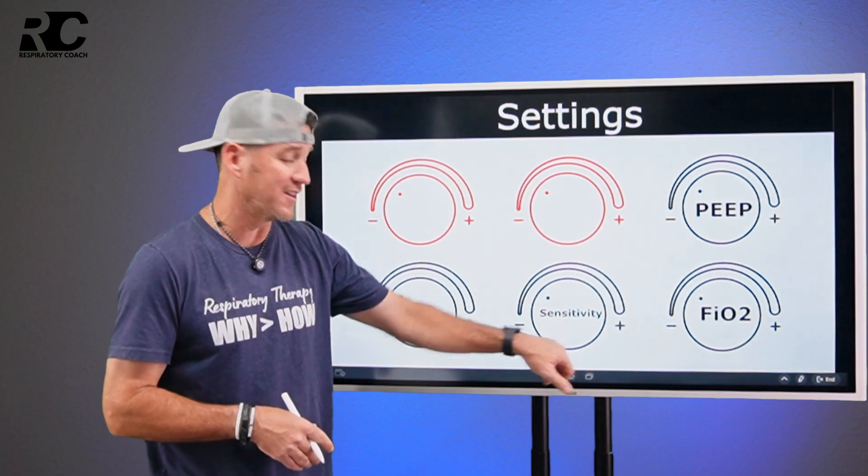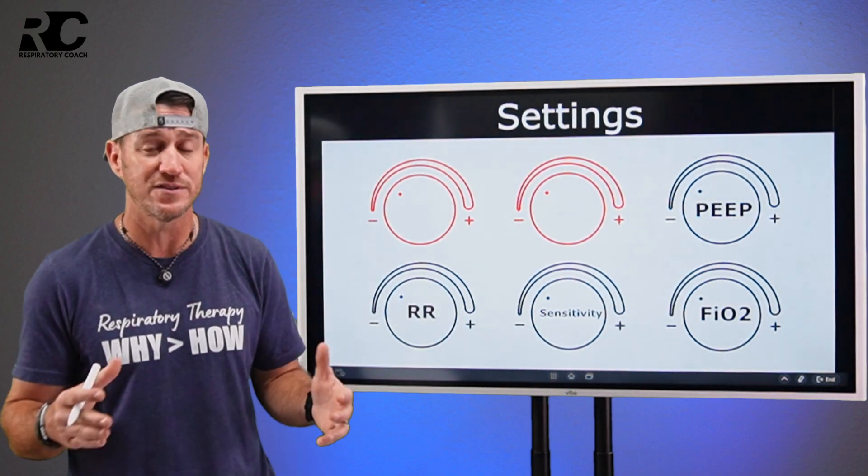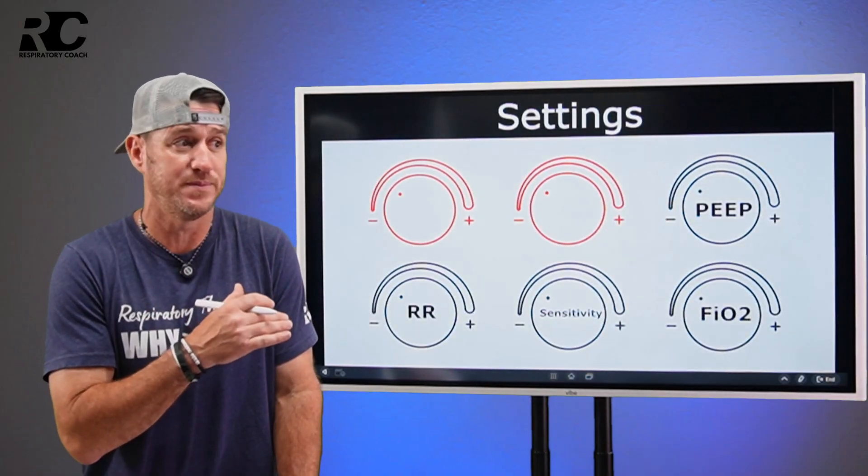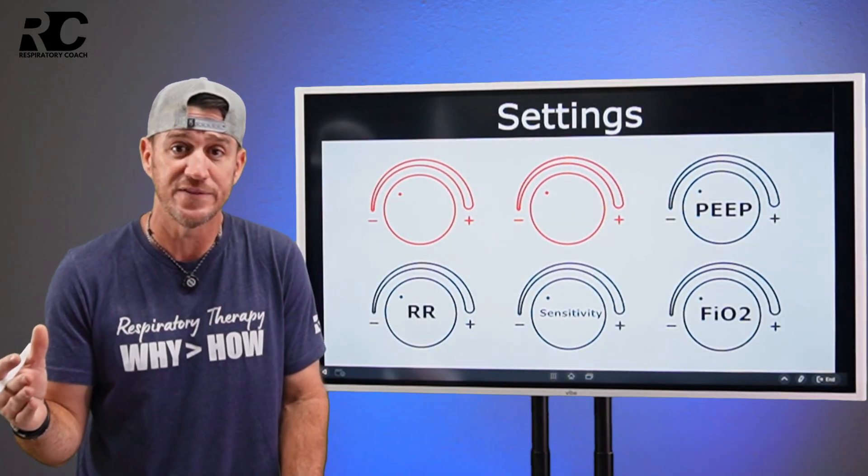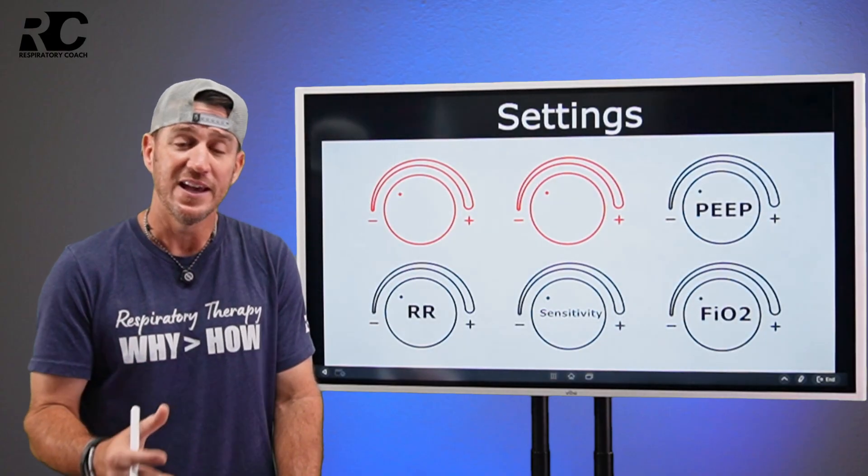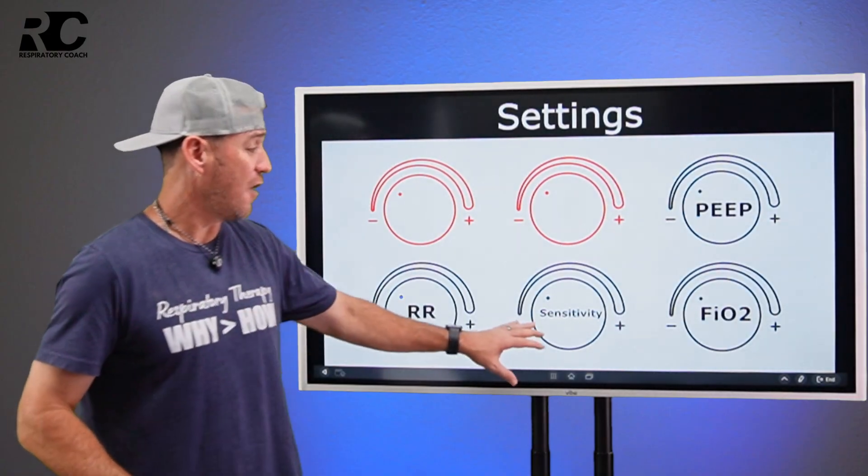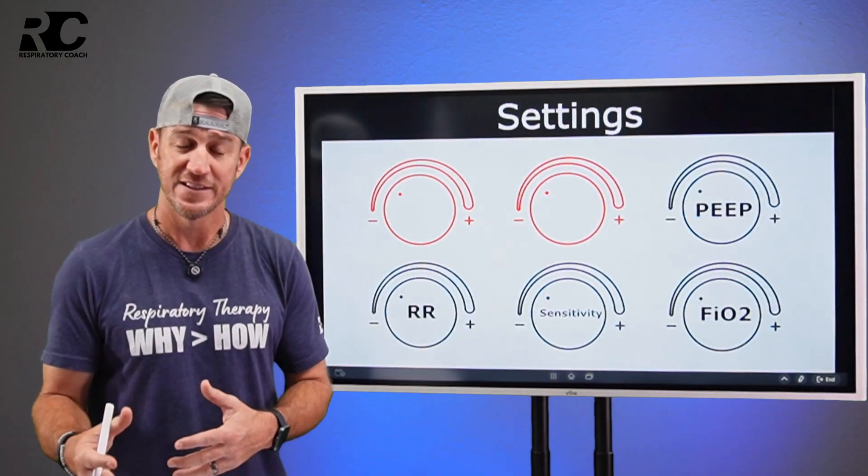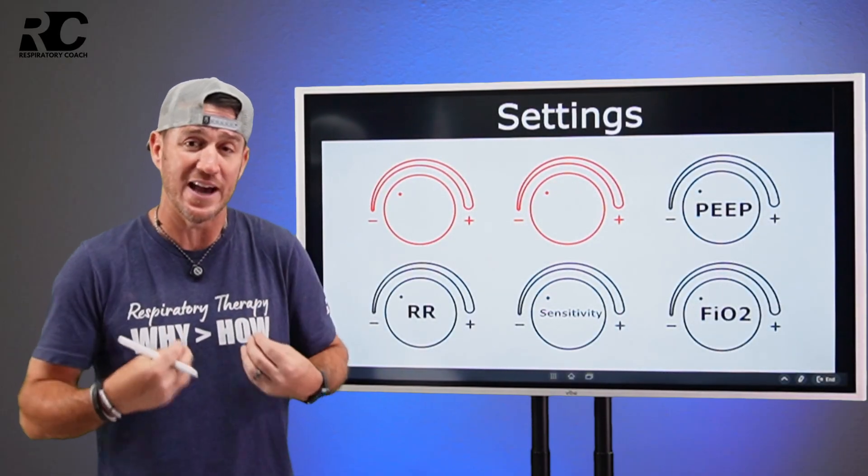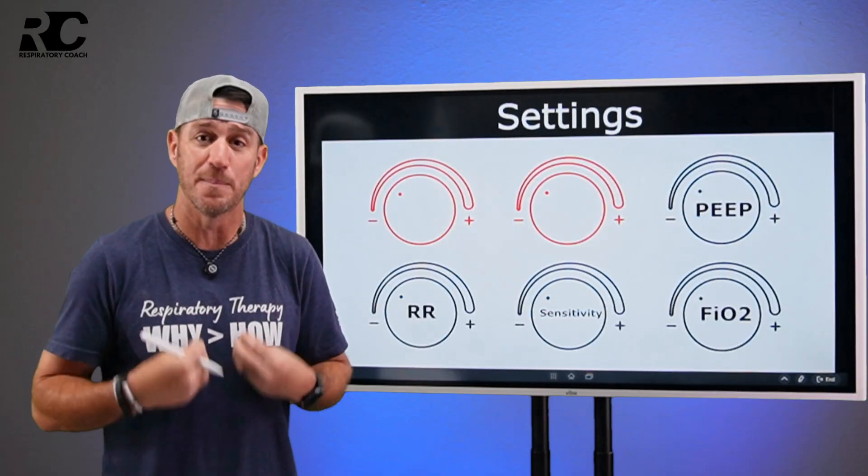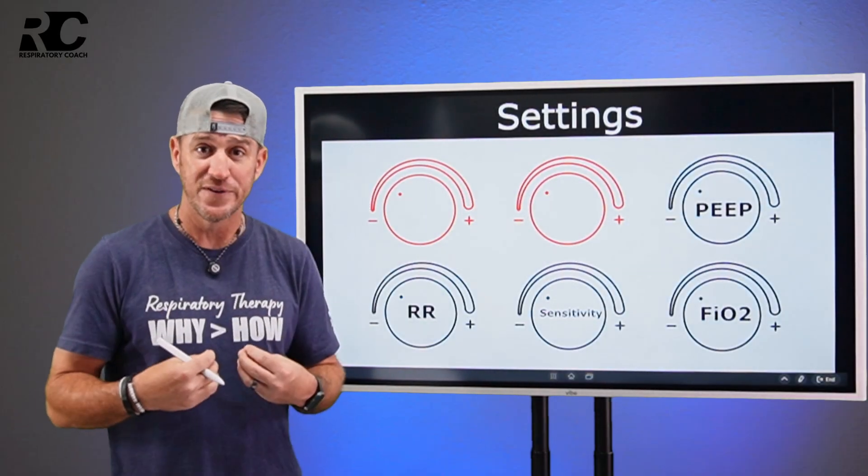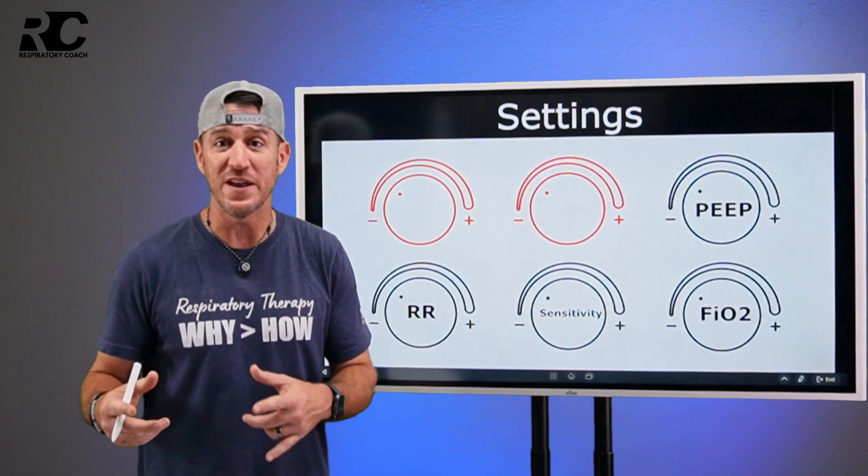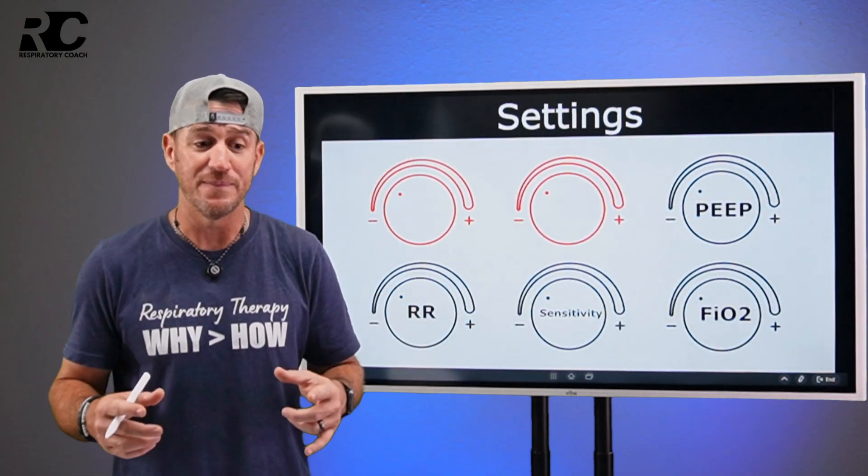Now the next one you see here is sensitivity, a standard setting that comes with just every mode that I can think of. Sensitivity is related to how the patient will initiate a breath. See the ventilator has to be able to recognize that the patient is taking a breath. If this is incorrectly set, then the vent may give a breath inadvertently.